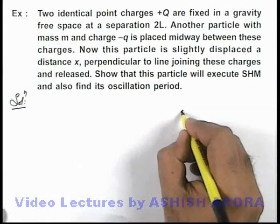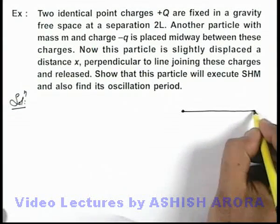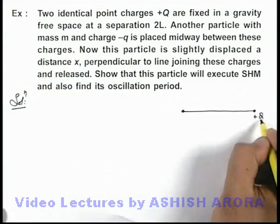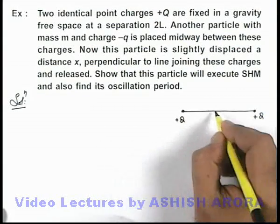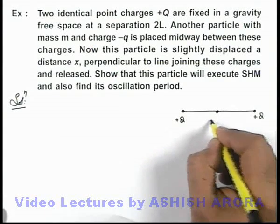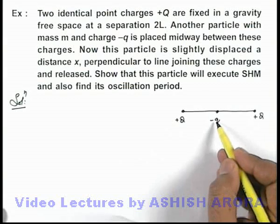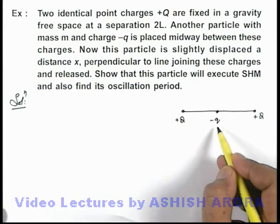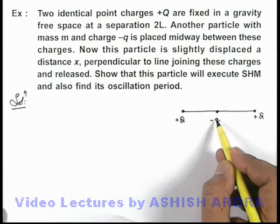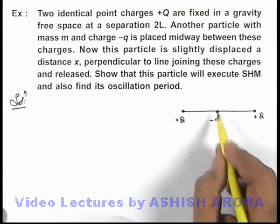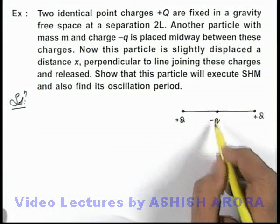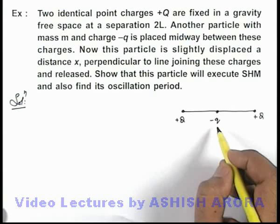In this situation, if these are the two charges +Q which are fixed, and at the center we place a charge -q, we already studied in previous lectures that the particle will be in stable equilibrium. As a negative charge, it is in stable equilibrium for its displacement perpendicular to the line joining the charges.